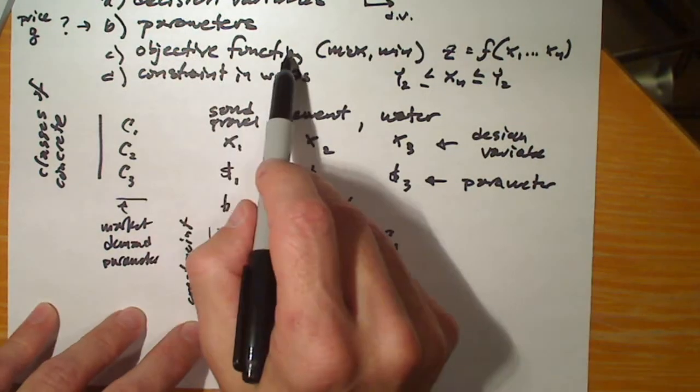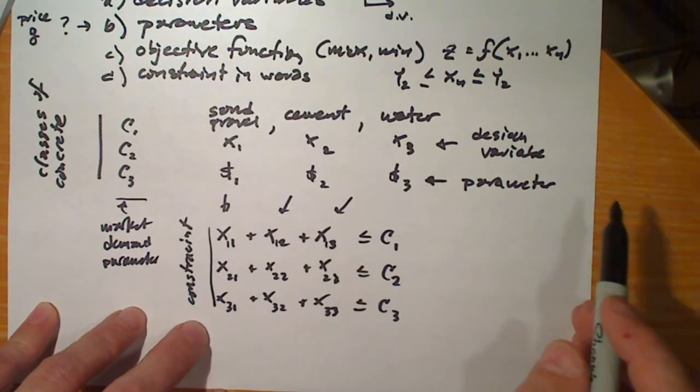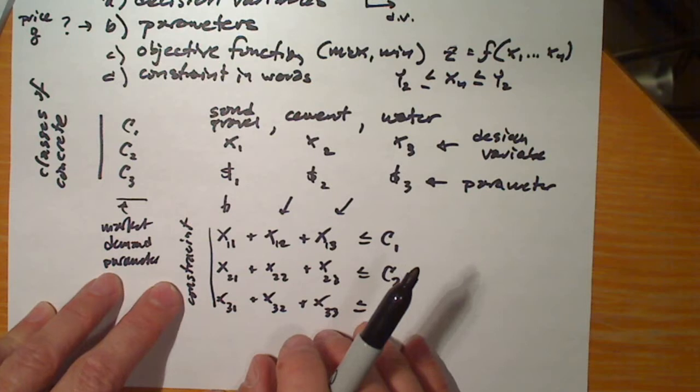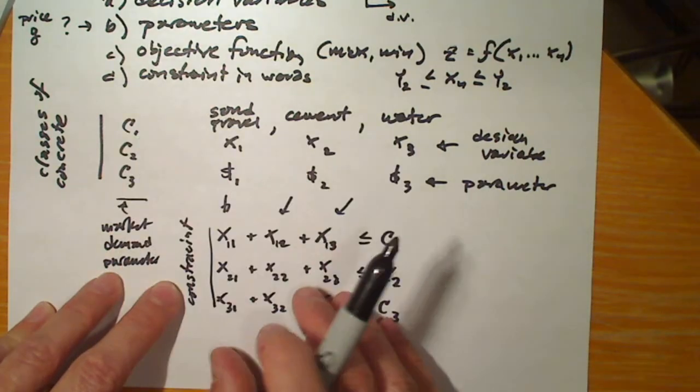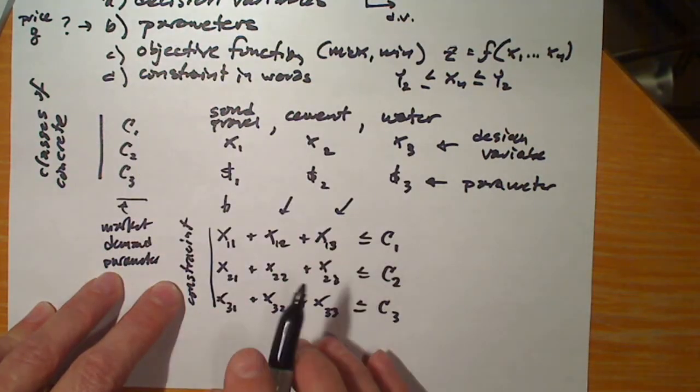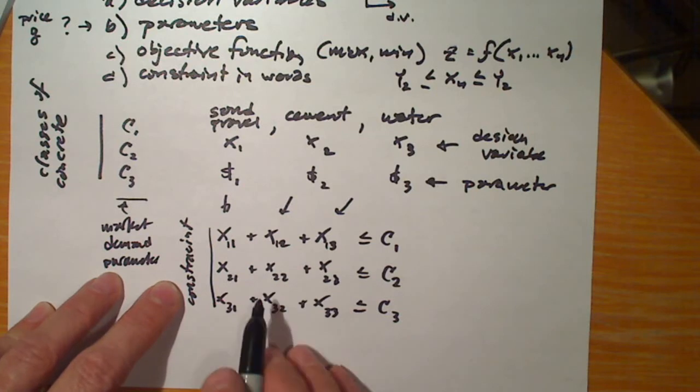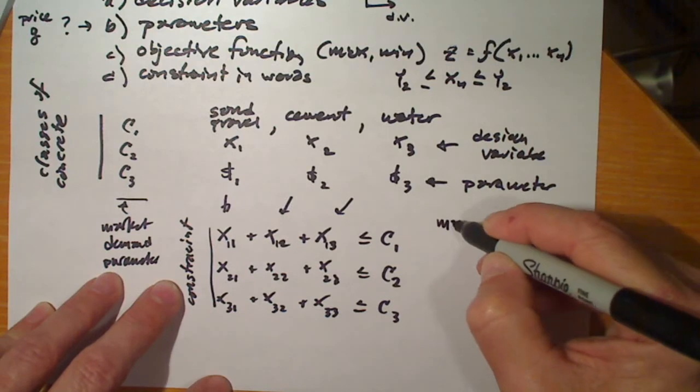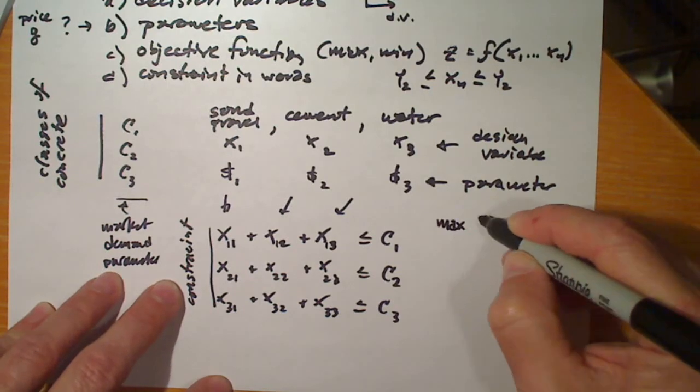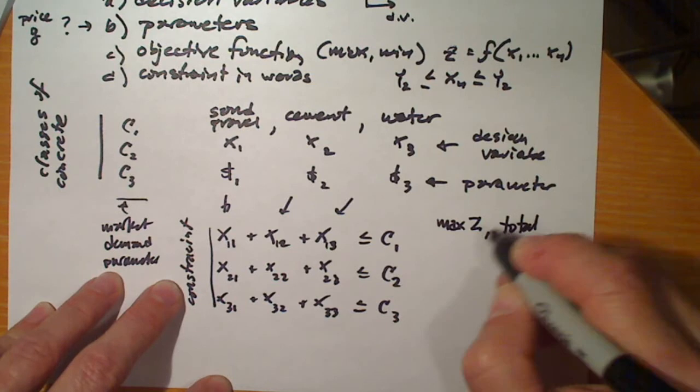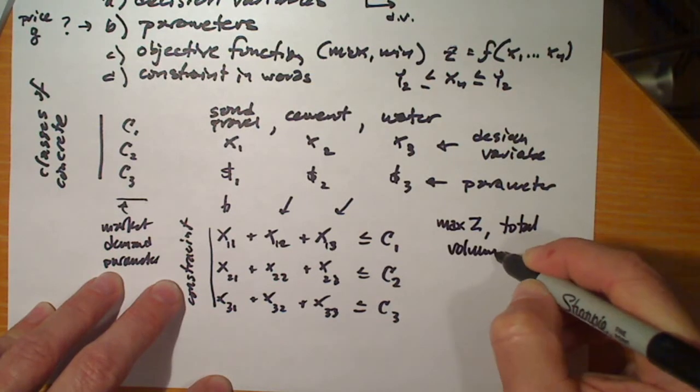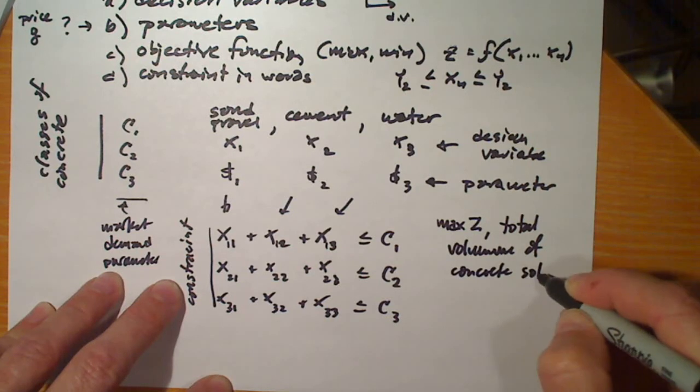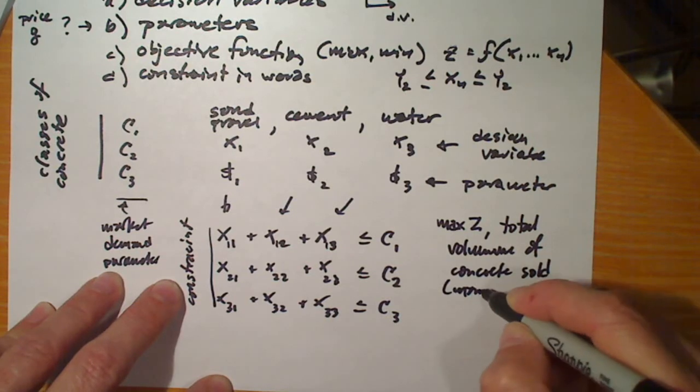We haven't yet done the objective function. So what shall the objective function be? One way to think about this is that all the mix designs, we might presume, are profitable, and so the contractor wants to sell the most of each one of these materials. We could say, for example, max z, which is total volume of concrete sold or manufactured.